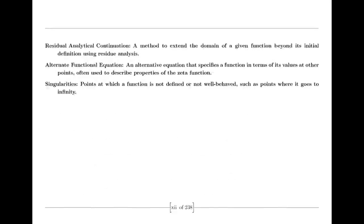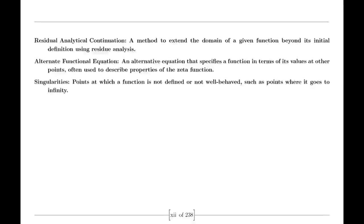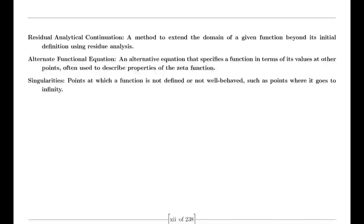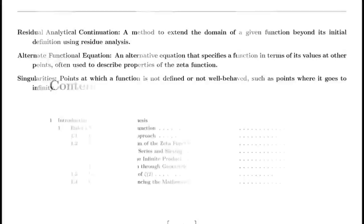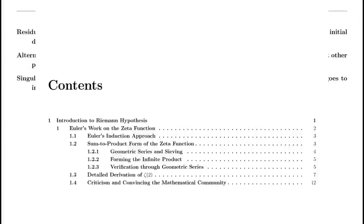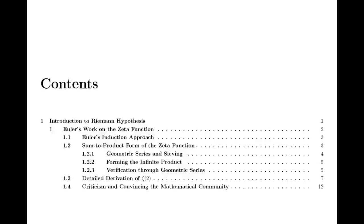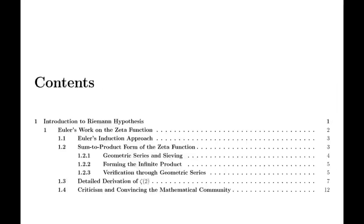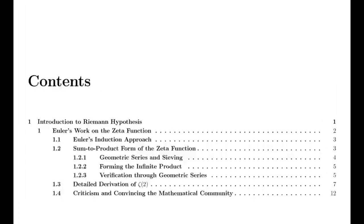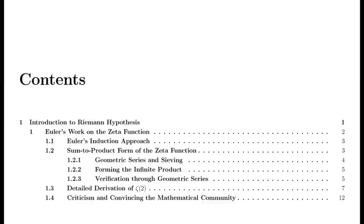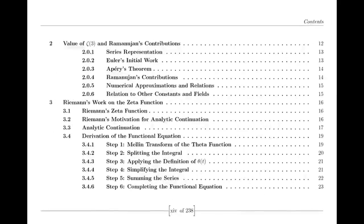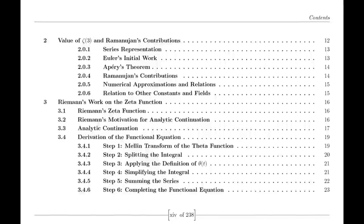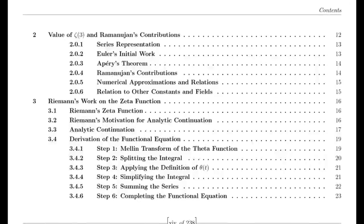In the 20th century, the zeta function continued to evolve. The emergence of analytic number theory brought new techniques for understanding the function's behavior. Mathematicians like Hadamard and de la Vallée-Poussin demonstrated the profound connection between the zeta function and the distribution of prime numbers, showcasing how this simple series could hold the key to one of mathematics' deepest mysteries.